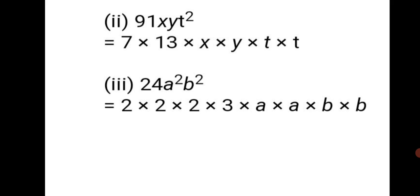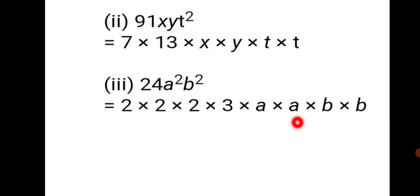Question 3: 24a²b². First find the factors of 24 using prime factorization. The prime factors of 24 are 2 × 2 × 2 × 3. You can verify: 2 twos are 4, 4 twos are 8, 8 threes are 24. Then, a² = a × a and b² = b × b. So 24a²b² = 2 × 2 × 2 × 3 × a × a × b × b.